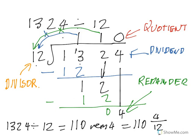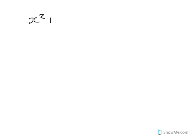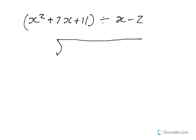We're going to use this process to do division with polynomials. Let's look at an example: x squared plus 7x plus 11, divided by x minus 2. We set it up similarly — underneath we write x squared plus 7x plus 11, and we're dividing by x minus 2.